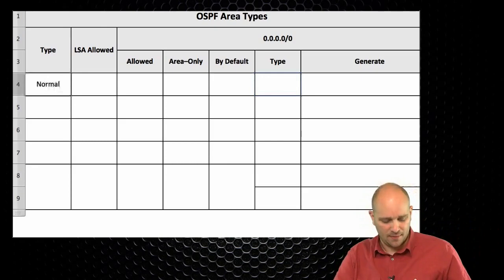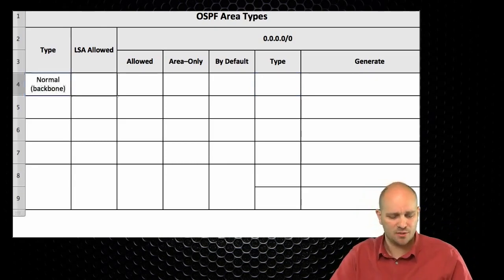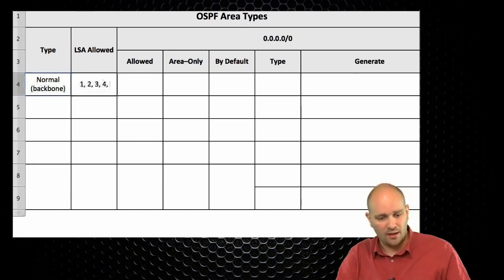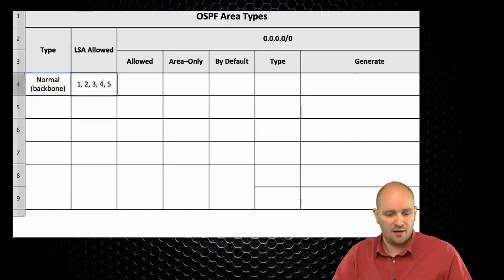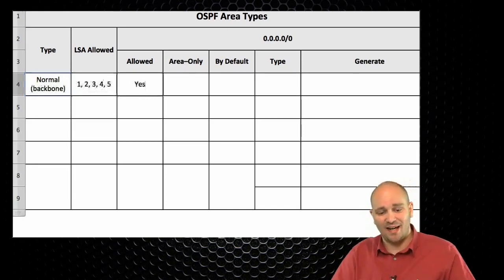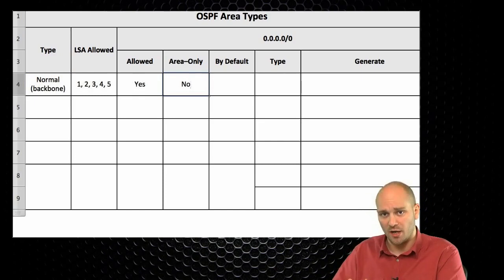The first area type is the normal area, which includes the backbone area as well. The allowed LSA types are 1, 2, 3, 4, and 5. The default route is allowed to exist but it cannot be generated only into this one area.